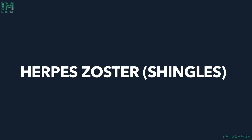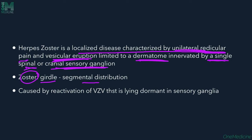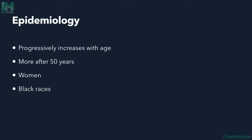Now, Herpes Zoster, otherwise called shingles, is a localized disease characterized by unilateral radicular pain and vesicular eruption limited to a dermatome innervated by a single spinal or cranial sensory nerve ganglion. 'Zoster' means girdle and implies segmental distribution. It is caused by reactivation of VZV, which lies dormant in the sensory ganglion after causing Varicella.